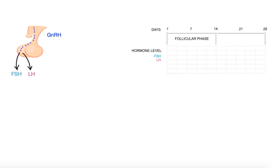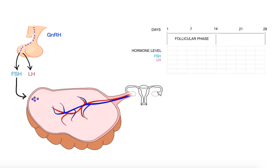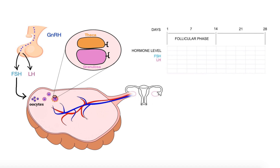Once released from the pituitary, FSH travels to the ovary where it binds to immature eggs called oocytes, thereby initiating their maturation. As the ovarian follicles grow, they become surrounded by layers of so-called theca and granulosa cells. LH then stimulates LH receptors expressed on theca cells, causing them to produce androgens, which then diffuse into granulosa cells that, in response to FSH binding, convert them to estrogens.